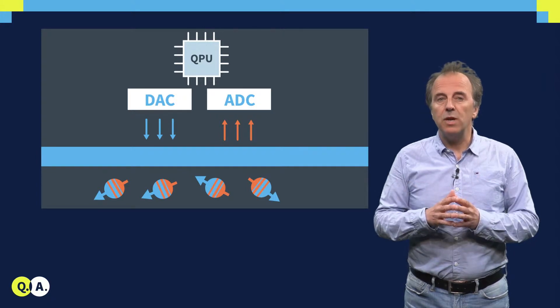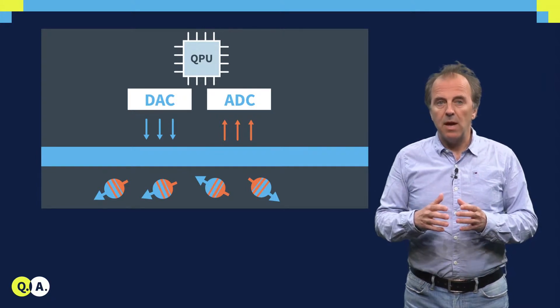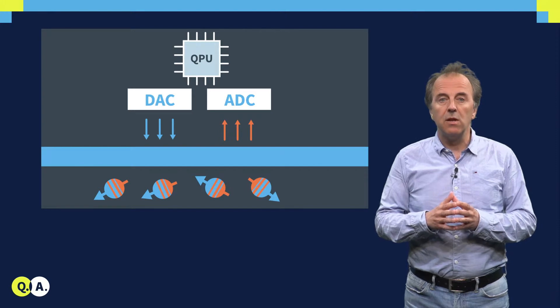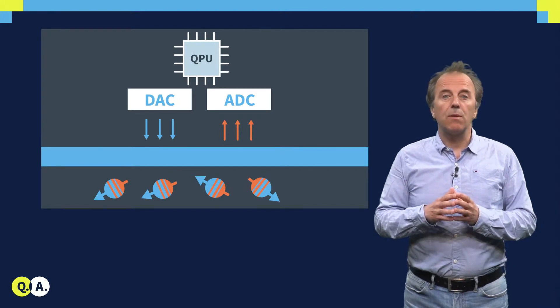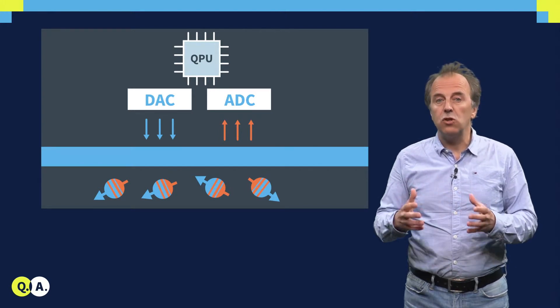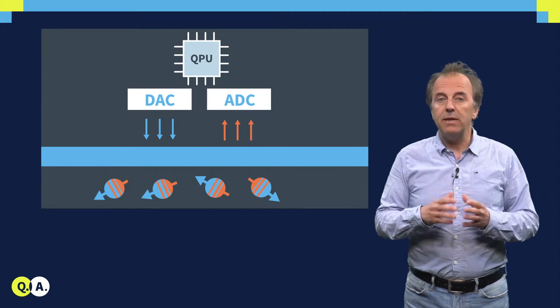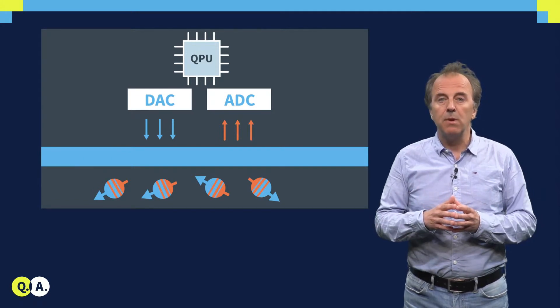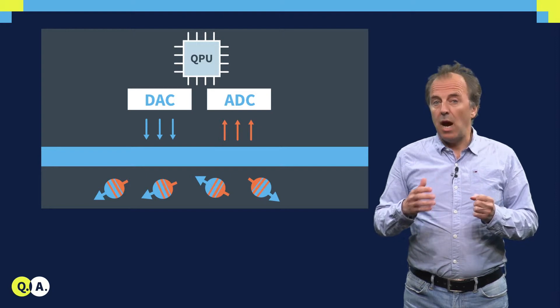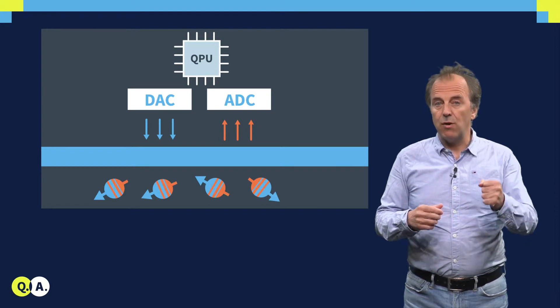For doing a measurement, we need to measure the qubit and convert the analog signal we receive back from the qubit using an analog to digital converter. Then we apply a digital signal processing algorithm to discriminate the outcome of a measurement, whether it is a zero or a one.